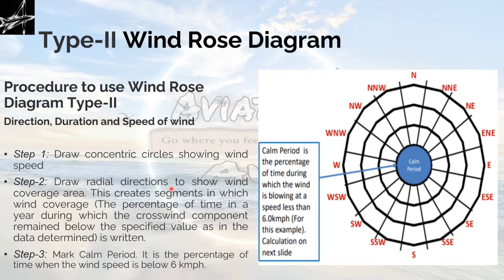Step 2: draw radial directions to show wind coverage area. This creates segments in which wind coverage is written. After drawing these concentric circles, we will draw the directions. It will cover 16 parts and then they will form these compartment-like things. These compartment-like things are the segments in which wind coverage is written.